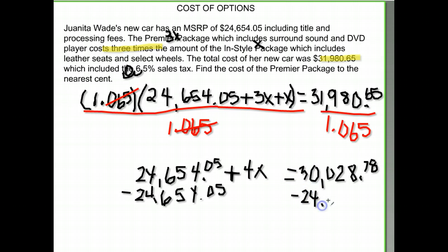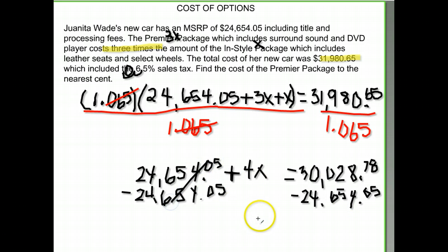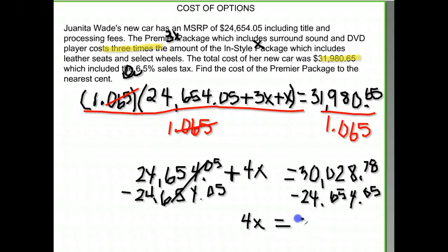Taking thirty thousand twenty eight dollars and seventy eight cents and subtracting twenty four thousand six hundred and fifty four dollars and five cents leaves just four X on the left, and five thousand three hundred and seventy four dollars and thirteen cents on the right.